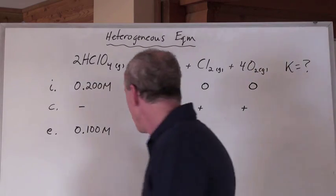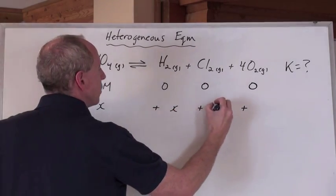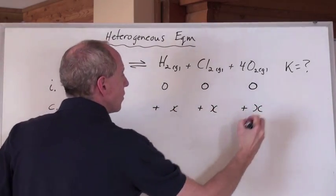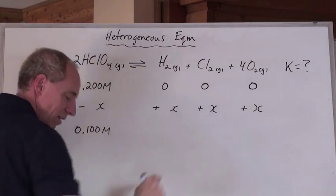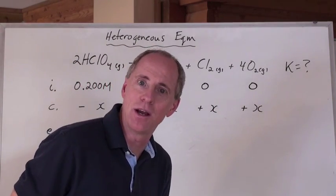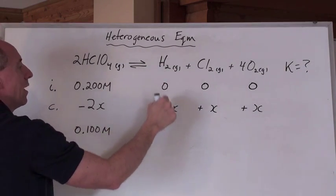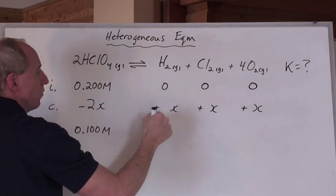And now we start to fill it in. And it's really simple, isn't it? We lose x. But, the x's have coefficients in front. And it's the coefficients of the balanced equation. You're going to lose two x here. And every time you lose two x here, you're going to gain, well, just one x here. So you can put a one in front, but I wouldn't. Just put plus x.